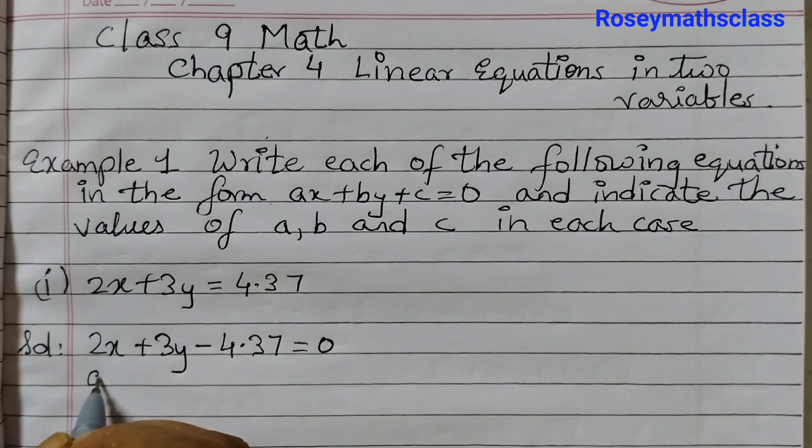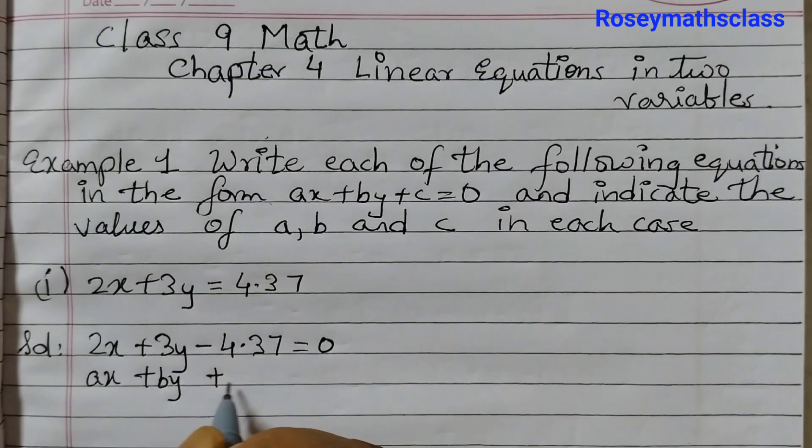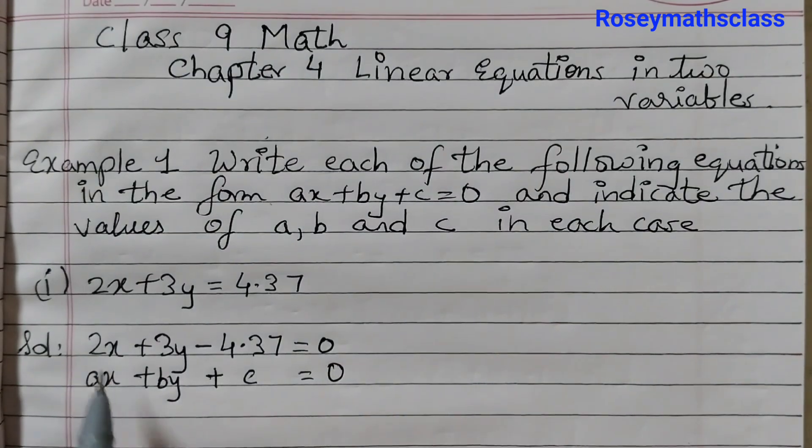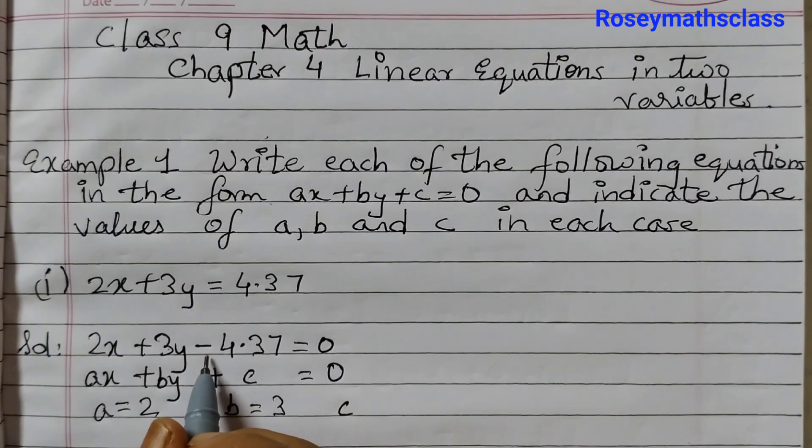Now if you compare, this is ax plus by plus c is equal to 0. So a is 2, b is 3 and c is minus 4.37.